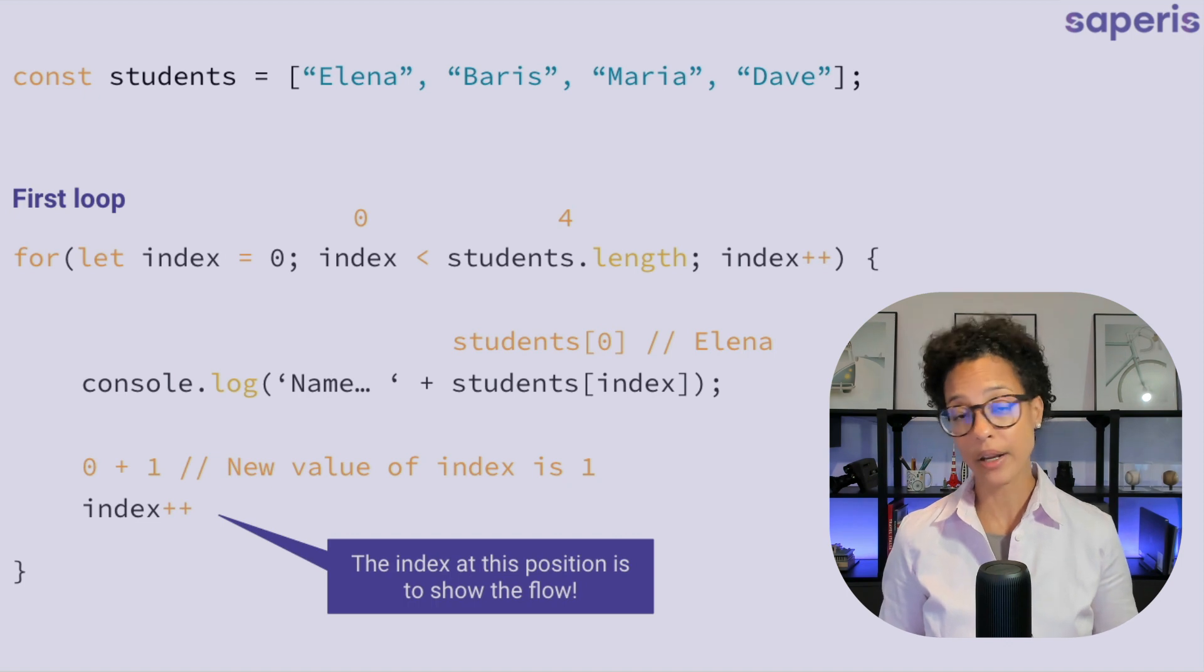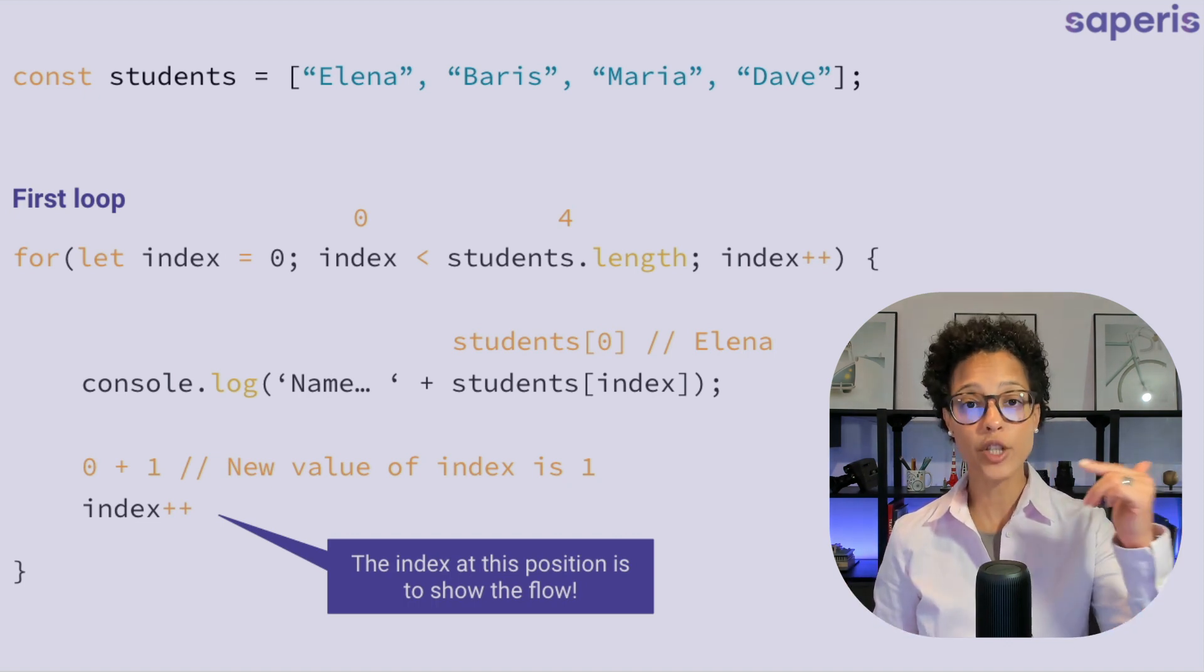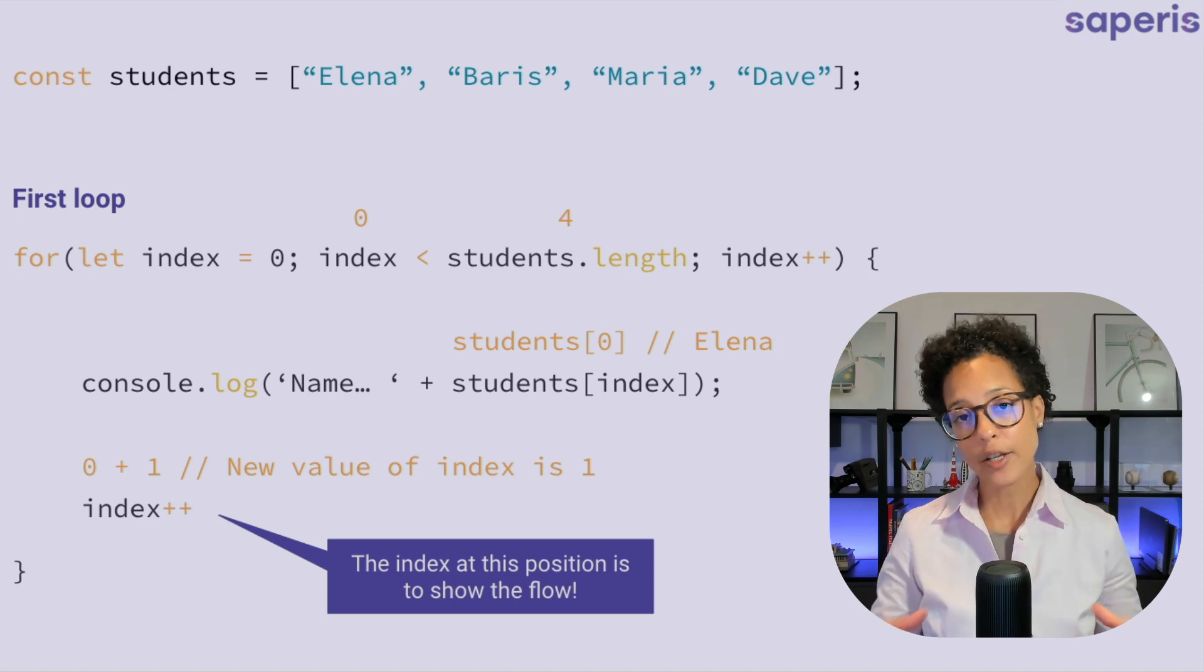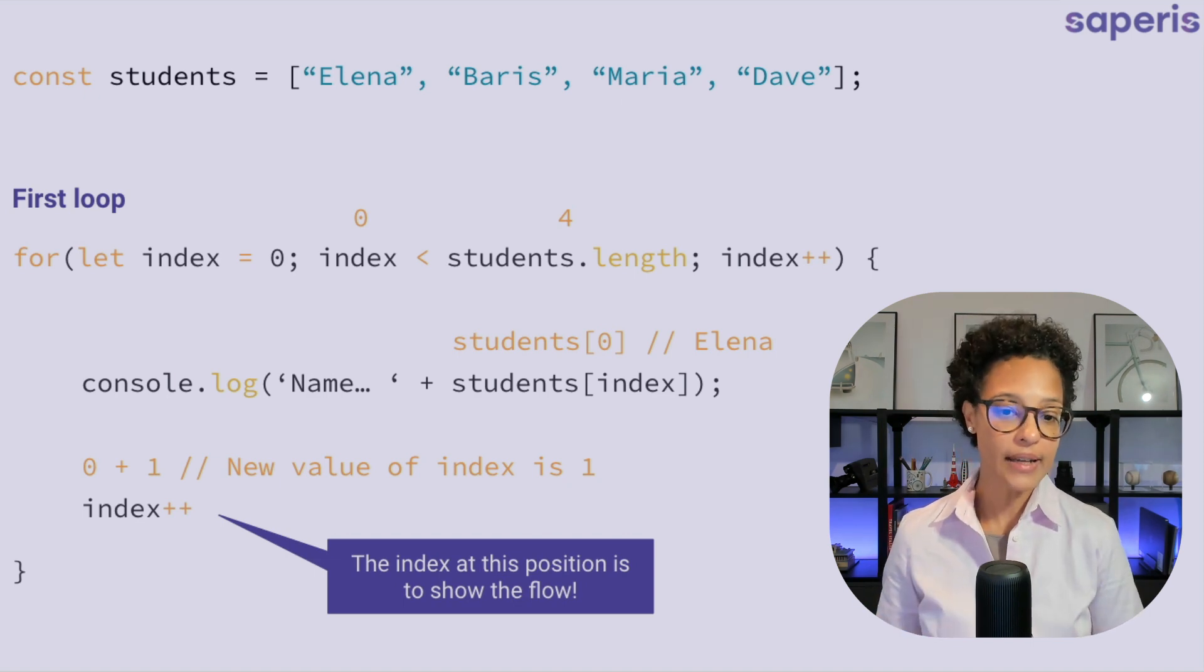So it's comparing is zero lesser than four? It is. And that's why we jump into the curly bracket and do whatever is in that statement. In this case, we're logging out to the console, a string and the value of students index.